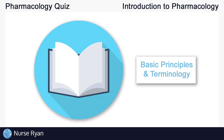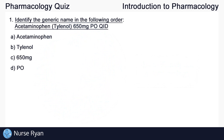You can use the timestamps in the video description to jump ahead. Starting off with question number one: Identify the generic name in the following medication order. The order is acetaminophen Tylenol, 650mg, PO QID.